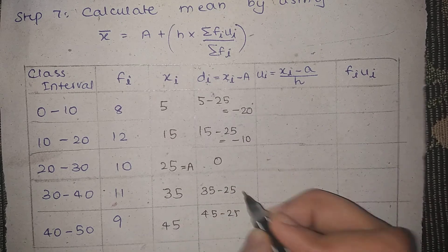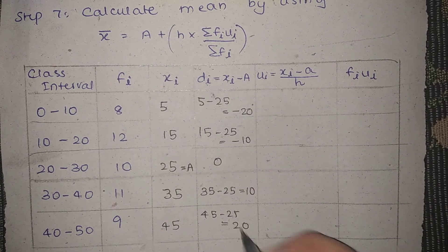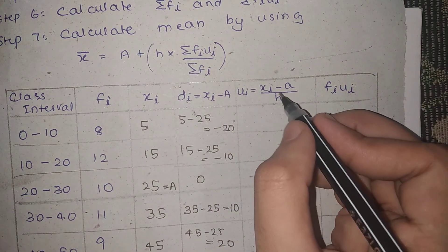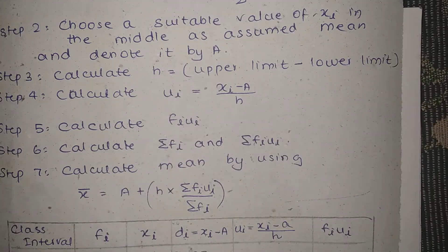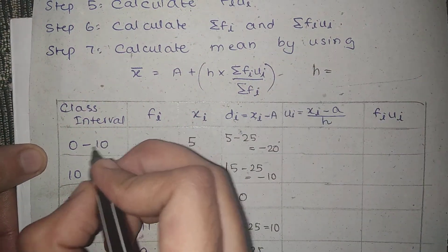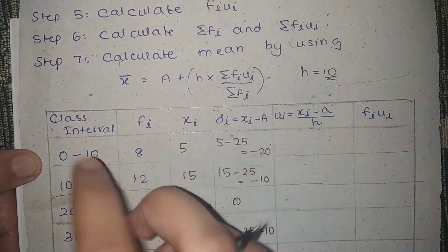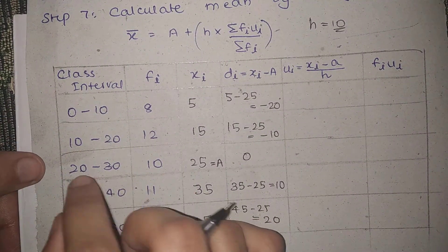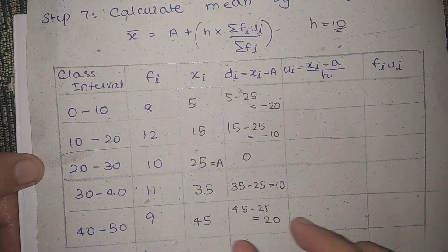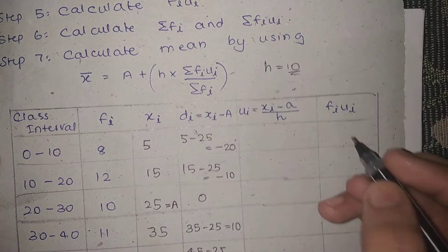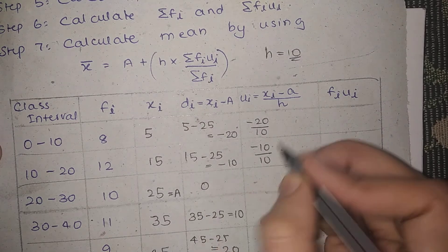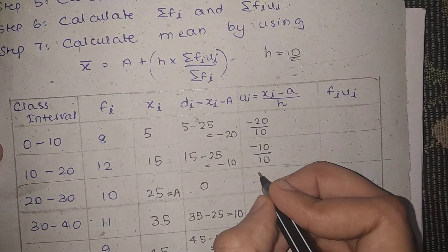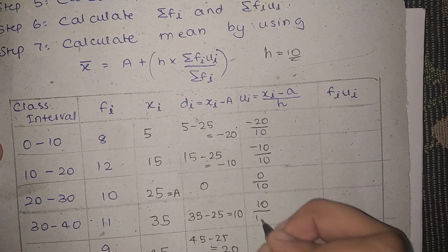The deviations are: minus 10, 0, 10, and 20. Now for ui: ui is xi minus a divided by h. h is upper limit minus lower limit. h equals 10, since 20 minus 10 equals 10, and 30 minus 20 equals 10. So: minus 20 divided by 10; minus 10 divided by 10; 0 by 10; 10 by 10; 20 by 10. The ui values are: minus 2, minus 1, 0, 1, 2.